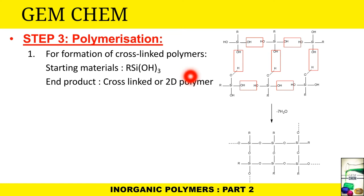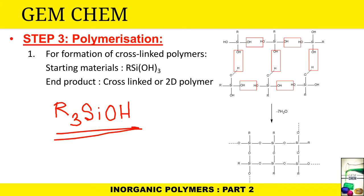This polymerization is stopped by a sensor system; otherwise it would go on and we could not get the desired product. The sensor system indicates when the desired cross-section is achieved. At this stage, units at the periphery of the polymer still have OH groups with potential to extend polymerization. Therefore, using the sensor device, polymerization is stopped by blocking those OH groups using R3SiOH, which initiates the chain termination step.